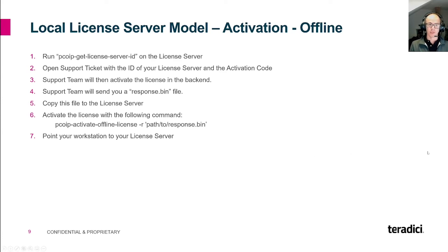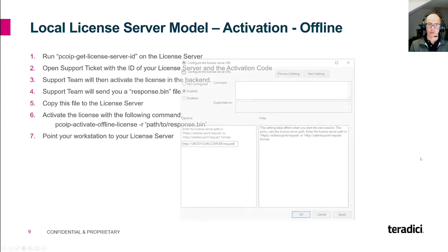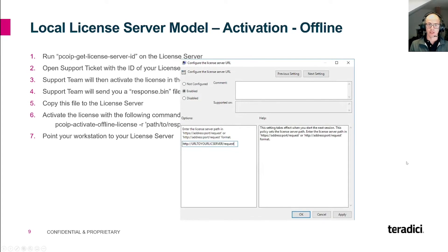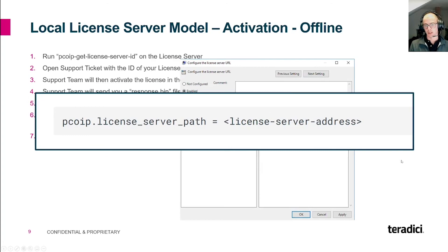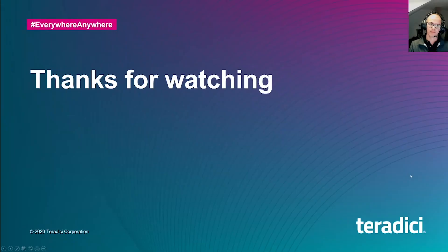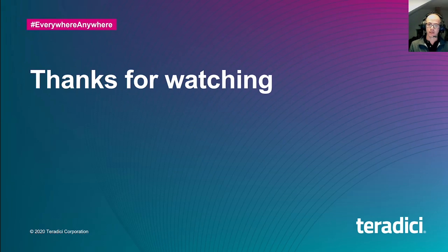Don't forget to point your workstation to the license server URL, either via Microsoft Group Policies or via the configuration file on Linux workstations. I hope this cleared up some questions you might have, and please check out the other videos from our Ask the Architect series to get more useful information.